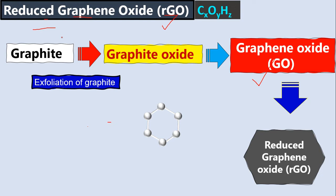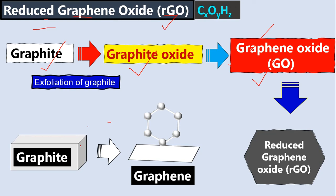Let's discuss reduced graphene oxide. First of all, why do we need to oxidize graphite to graphite oxide, then graphite oxide to graphene oxide, and then get reduced graphene oxide? We need graphene, and we know graphene has a honeycomb structure where carbon atoms are arranged in a hexagonal shape. We cannot get this single-atom-thick layer directly from graphite, which is a bulk material, because there are so many difficulties. This is why we need to follow this path — we take graphite first and oxidize it, a process called exfoliation of graphite, or chemically, chemical exfoliation of graphite.